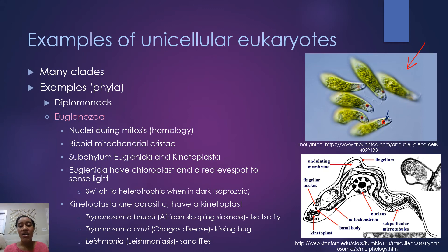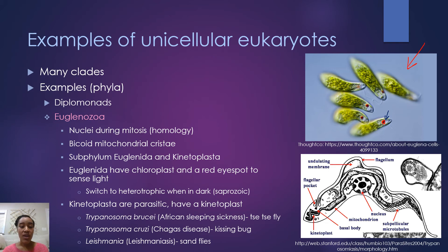Kinetoplasta are all parasites and have a kinetoplast — that dense area of DNA situated near the kinetosome of the flagella. Examples include Trypanosoma brucei, which causes African sleeping sickness and is transmitted via the tsetse fly vector; Trypanosoma cruzi, which causes Chagas disease via the kissing bug vector; and Leishmania, which causes leishmaniasis and is transmitted via sand flies. Leishmania is particularly relevant in veterinary medicine, especially in dogs.